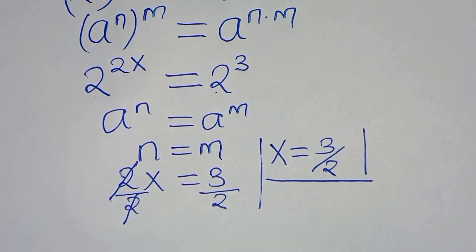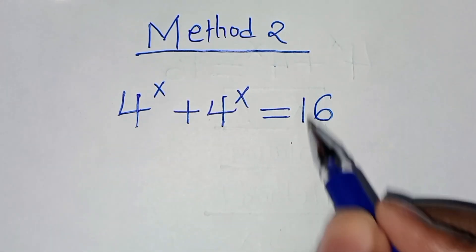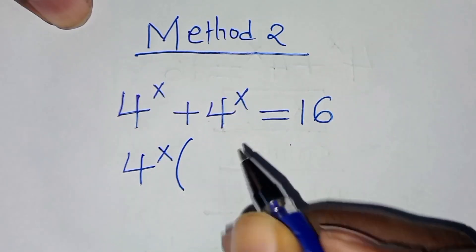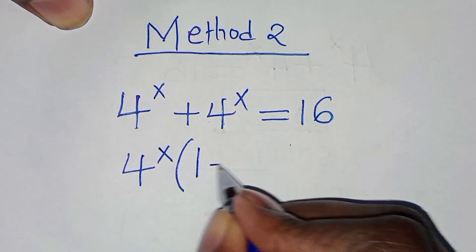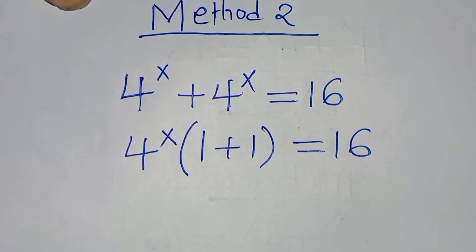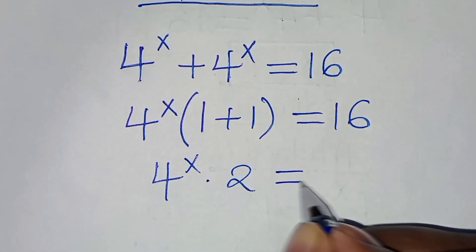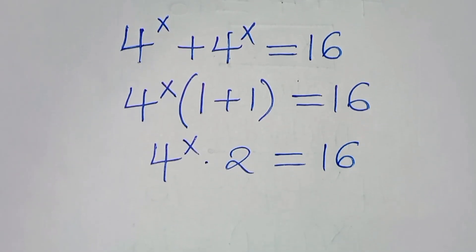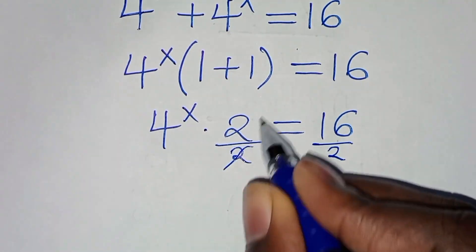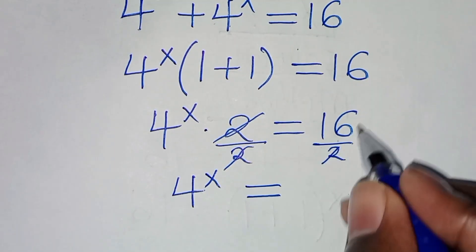Let's apply method 2. We have 4 to the power x plus 4 to the power x equal to 16. Given that 4^x is common, we factor out 4 to the power x, so that here we have 1 plus 1, equal to 16. This implies that 4 to the power x times 2 equals 16. Dividing both sides by 2, 4 to the power x equals 16 divided by 2, which is 8.